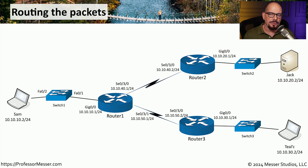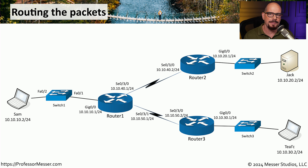If a router refers to its table and does not find a next hop for that destination IP address, it will simply discard that traffic. So you can see why having a valid routing table becomes very important.